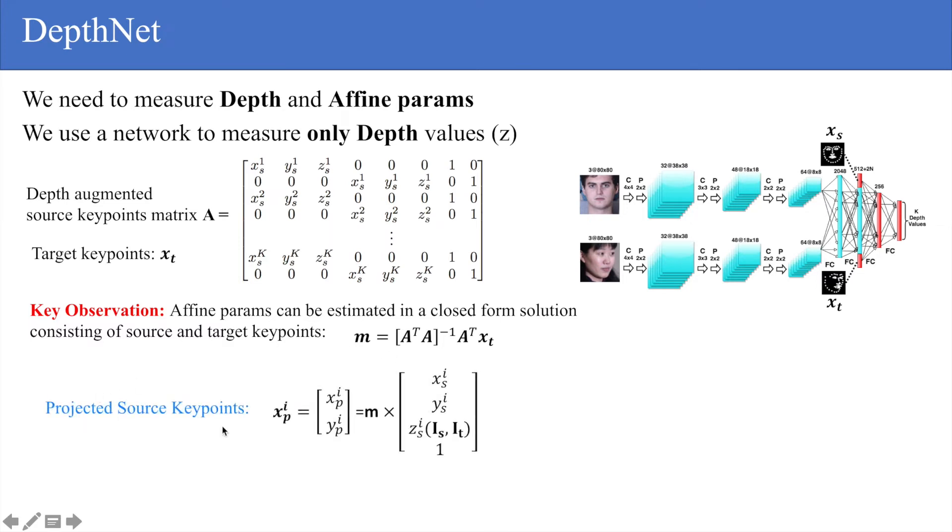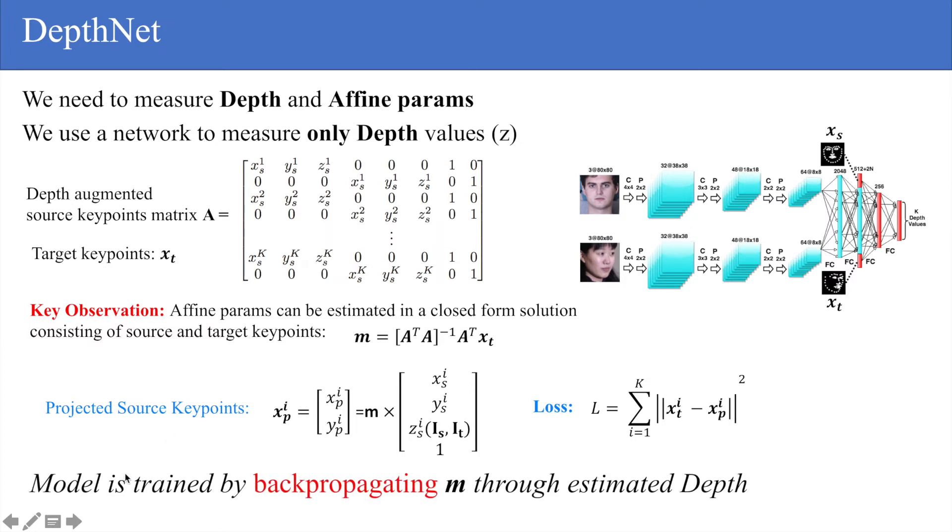We compute the projected source keypoints as follows, and then we compute a loss, which is the Euclidean distance between the projected source keypoints and the target keypoints.